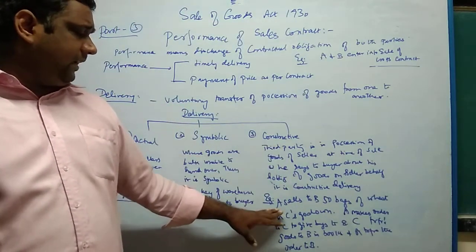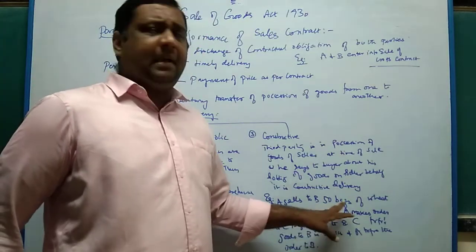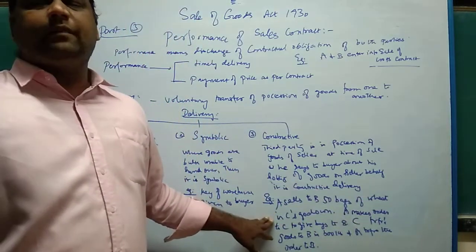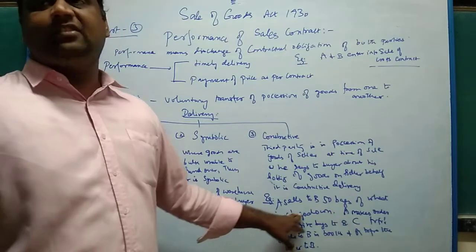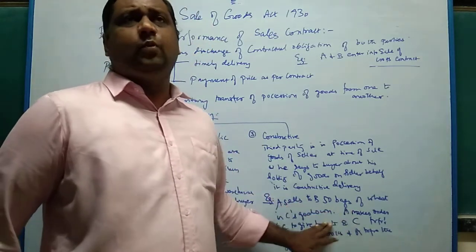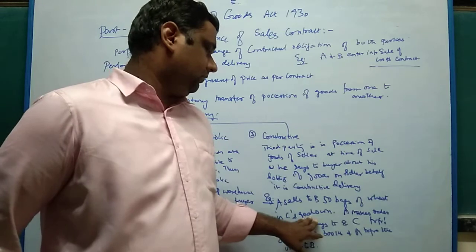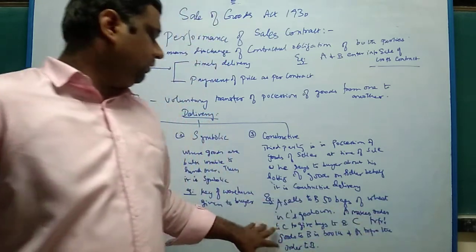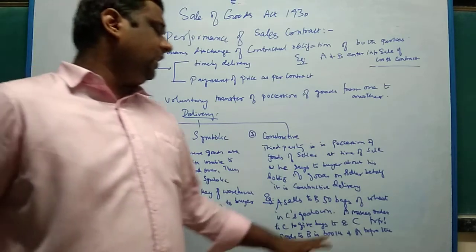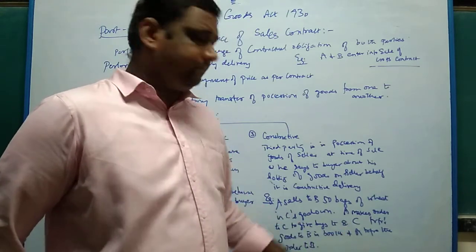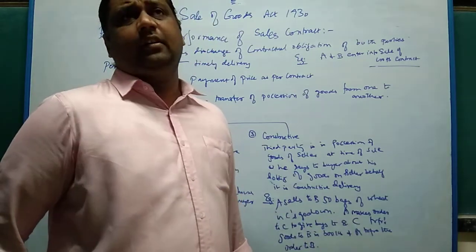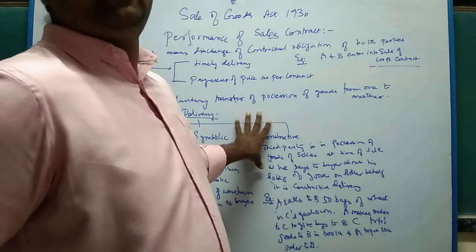For example, A sells 50 bags of wheat to B, and the 50 bags are in C's godown — C being a third party. A makes an order to C saying: 'I have received the price; you may transfer the ownership in your books.' C transfers the goods to B in the books of accounts, and A makes the order to B directly. This is the example of constructive delivery.